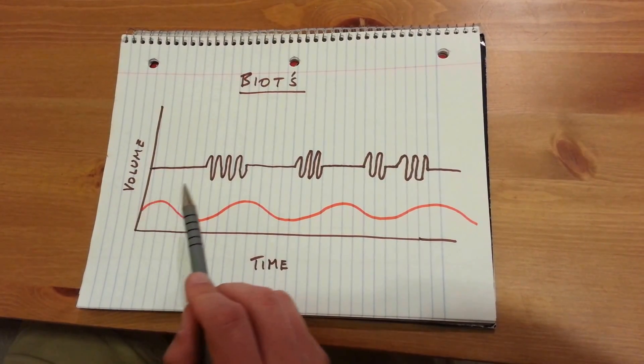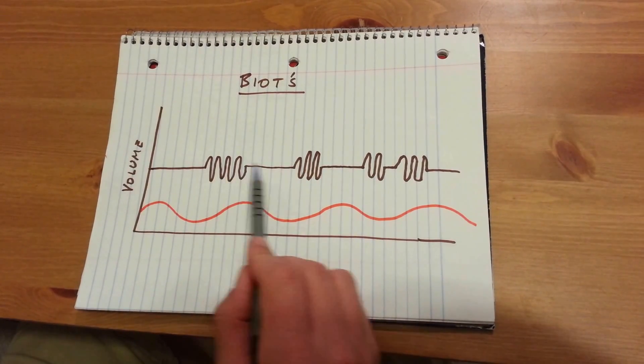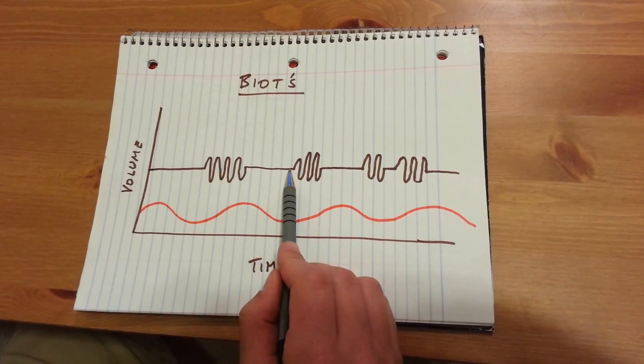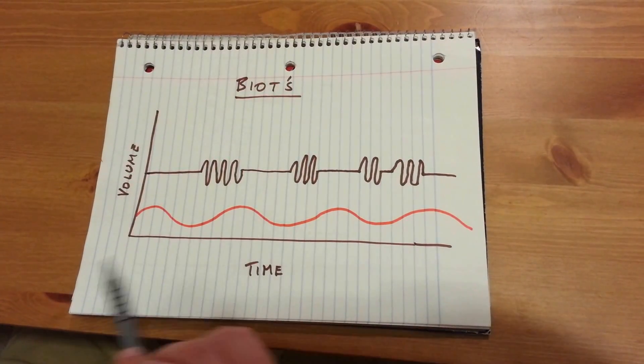In this drawing, compare the pattern of shallow, fast respirations and apnea of Biot's respirations. Compare that to the normal respiratory pattern here, which is smooth and regular.